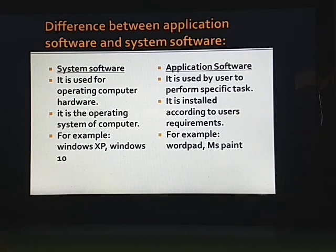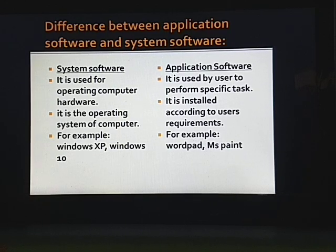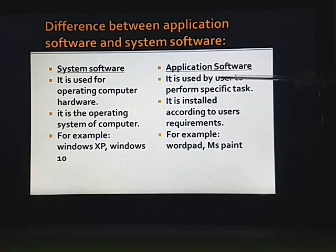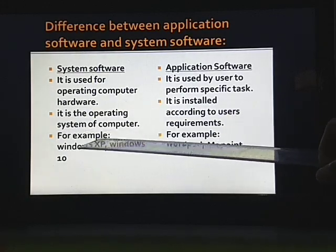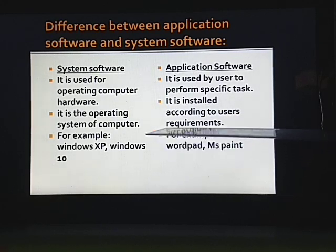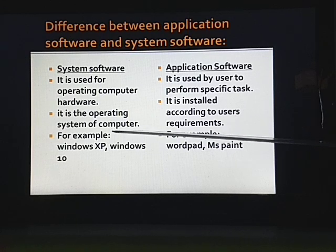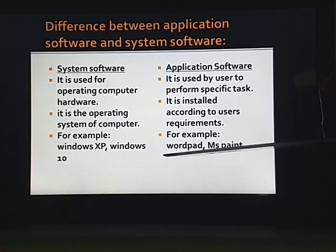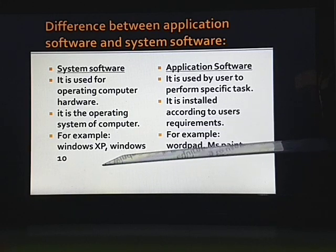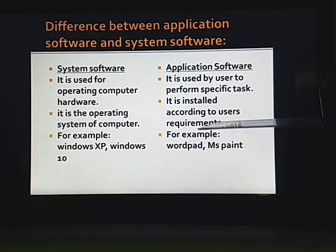Next, the difference between application software and system software. System software is the most important software — it is used for operating computer hardware. Application software is used by the user to perform specific tasks. System software is the operating system of the computer, and application software is installed according to the user's requirement. We must install the operating system, but we may not install any application software. For example, Windows XP and Windows 10 are system software, and MS Paint is application software.